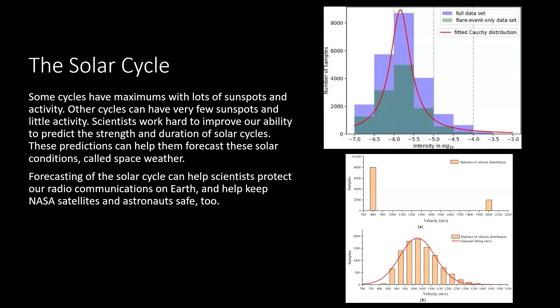Some cycles have maximums with lots of sunspots and activity. Other cycles can have very few sunspots and little activity. Scientists work hard to improve our ability to predict the strength and duration of solar cycles. These predictions can help them forecast solar conditions called space weather. If you've ever wondered what space weather is about, it's the scientists trying to predict and to know what kind of activity will be happening on the sun, so they know what to do in terms of protecting satellites and grids. We're all dependent on communication equipment and satellites that circle the Earth. And it also keeps the astronauts safe. When we know what the solar weather or the space weather is like, we could take corrective or protective measures.